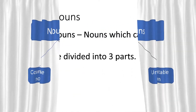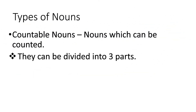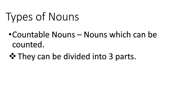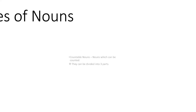There are mainly two types of nouns: countable nouns and uncountable nouns. Firstly, we will learn about countable nouns. Nouns which can be counted are called countable nouns. They can be divided into three parts.